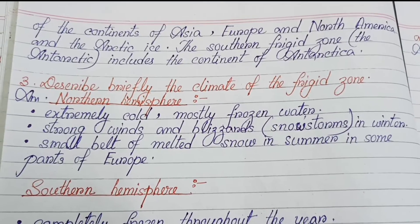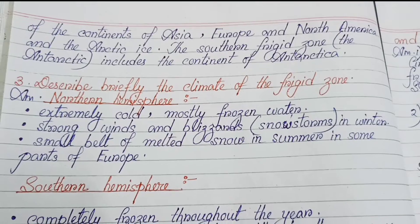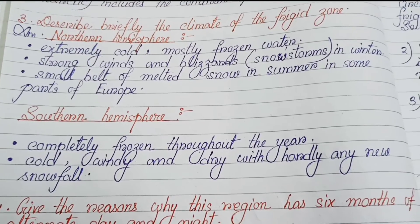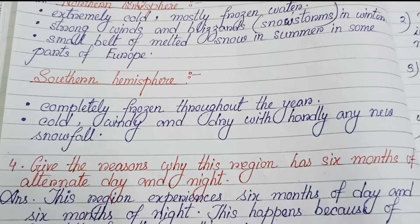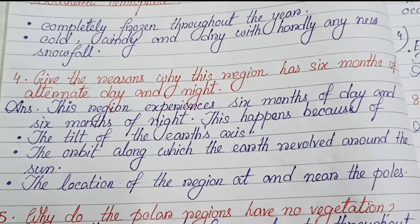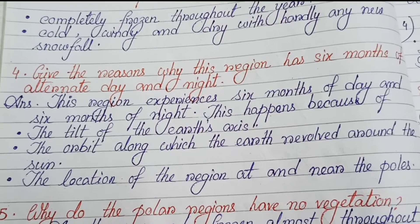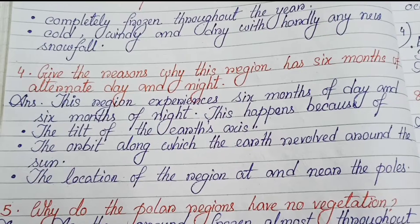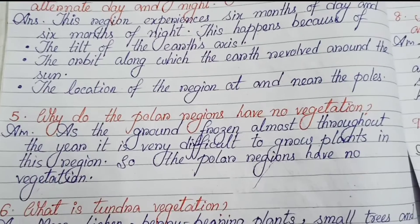Number three: Describe briefly the climate of the frigid zone. Northern hemisphere — extremely cold, mostly frozen water, strong winds and blizzards. In summer, a small belt of melted snow in some parts of Europe. Southern hemisphere — completely frozen throughout the year, cold, windy and dry with hardly any new snowfall. Number four: Give the reasons why this region has six months of alternate day and night. This happens because of the tilt of the earth's axis, the orbit along which the earth revolves around the sun, and the location of the region at and near the poles.